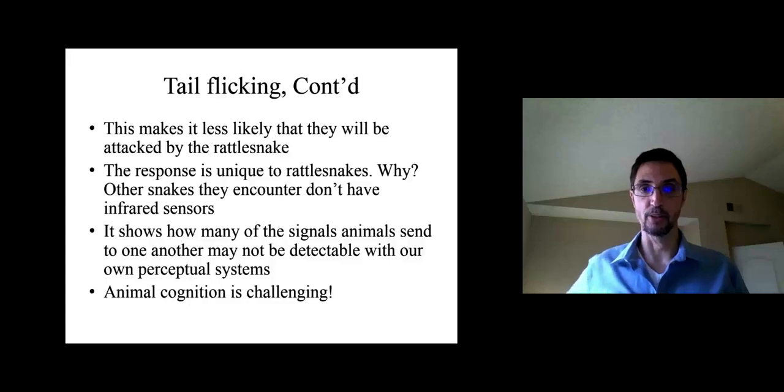So one of the things that this shows is that many of the signals that animals send to one another may not be detectable with our own perceptual systems. We can't see infrared. To detect infrared we need special sensors, we need special technology. And this makes animal cognition, this is one of the things that makes animal cognition challenging.